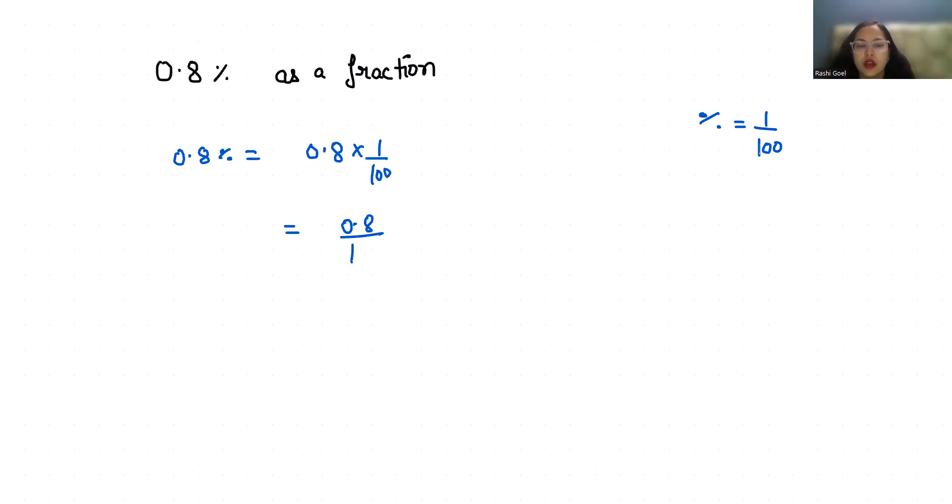Now I'm going to remove this decimal by multiplying with 10 in numerator and denominator. So it becomes 8 by 1000. So it comes in fraction form.